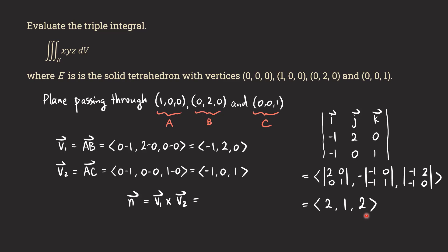Now we do the cross product, computing the 3×3 determinant. To quickly review: cross out the first row and first column to get the 2×2 determinant for the i-component, then cross out the first row and second column for the j-component — don't forget the extra negative sign for the middle component — and similarly for the k-component. The 2×2 determinant is the main diagonal entries minus the other diagonal entries multiplied together. So two times one minus zero times zero gives us two, and we get the normal vector that way.